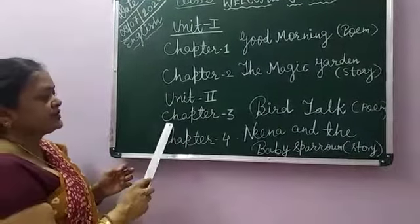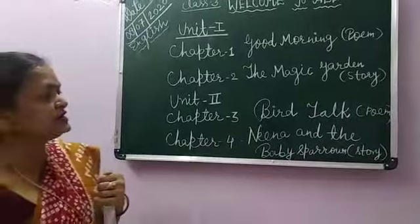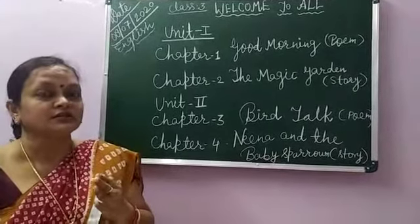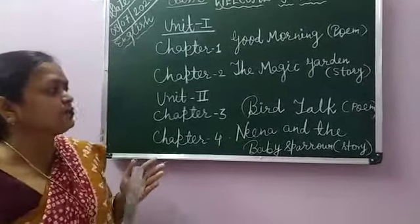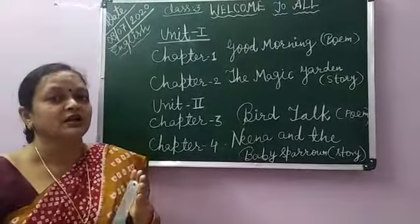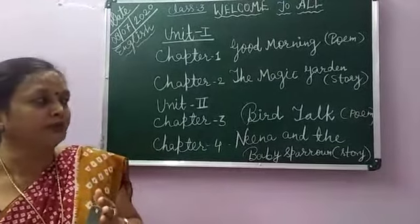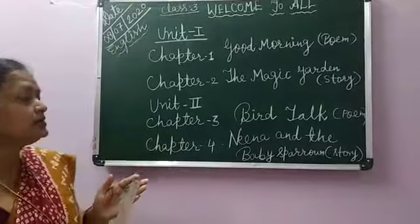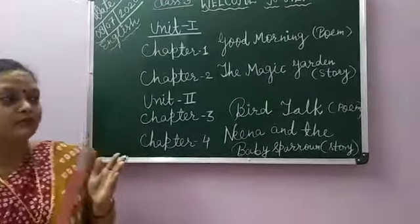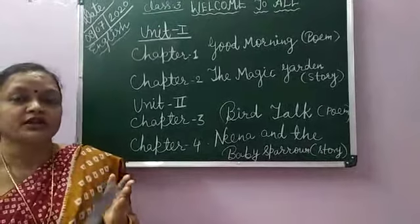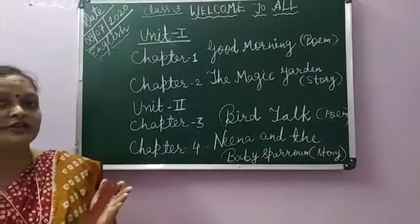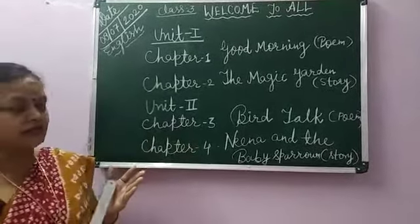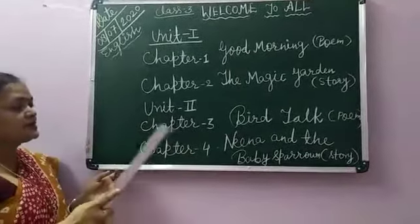Next, chapter 3. The chapter's name was Bird Talk. It was a simple poem. In this poem, two birds are talking about people. They say that how people are funny — they don't have feathers and they don't want to sit on wires.